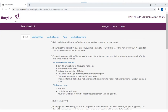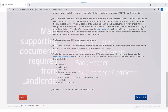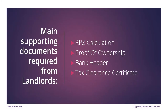Please read the landlord terms and conditions carefully. HAP payments are made in arrears at the end of each calendar month. Landlords must provide the necessary documents with each application. These documents are a rent pressure zone calculation, a proof of ownership, a bank header, and a tax clearance certificate. There is another video, landlord supporting documents, which will explain these in greater detail.